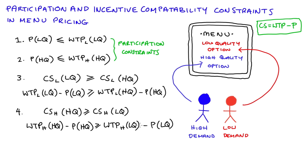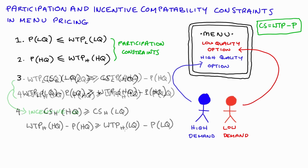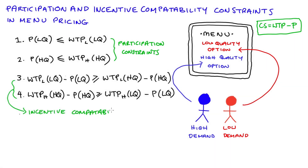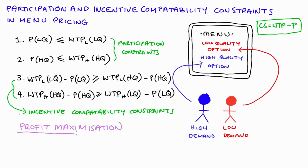These third and fourth conditions are what we call incentive compatibility constraints, and if they're fulfilled it means that our consumers' behavior will be in line with what the firm wants. So we have in total four conditions to fulfill if we want to construct our menu correctly. You might have noticed that the inequalities are not strict — I've included the point of equality — and I will address this at the end of the video, after I talk about profit maximization.